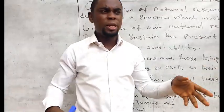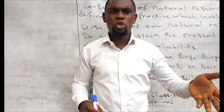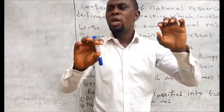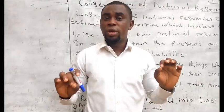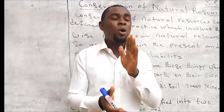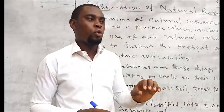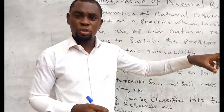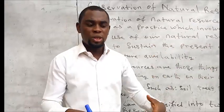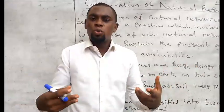Some organisms like dinosaurs and others on earth today have gone into extinction — they can be found nowhere again, just because of poor conservation. On this, governments came up with policies, and that is why you now see what we call zoological gardens and botanical gardens.